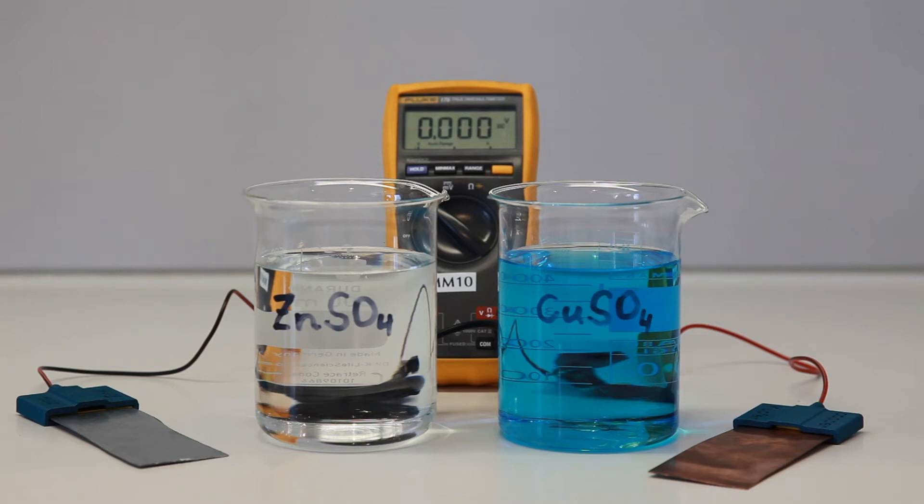In this experiment we want to build a galvanic cell, more particularly a copper zinc cell or also Daniel cell. We use two metal sheets as electrodes.